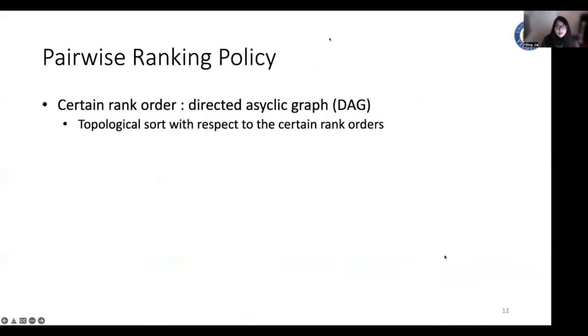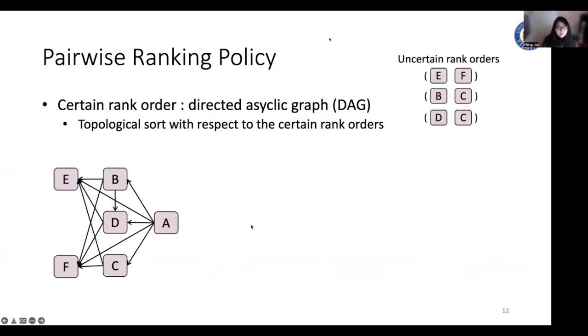Now we introduce our pairwise ranking policy. With the constructed certain rank orders, we can create a document graph, where each node is a document and the edges are the certain rank orders. Due to the transitivity of the sigmoid function, such graph is a DAG. Then we can perform a topological sort to generate the rank list. For example, assume we have six documents and we have these certain rank orders here. And to perform this topological sort, we first check document A, because there's no in-link for this document. And we put it on the rank result. And this is equivalent to the exploitation in our ranking policy.